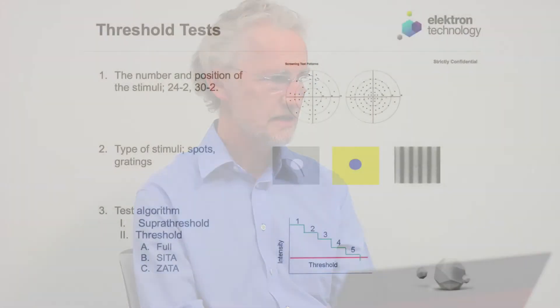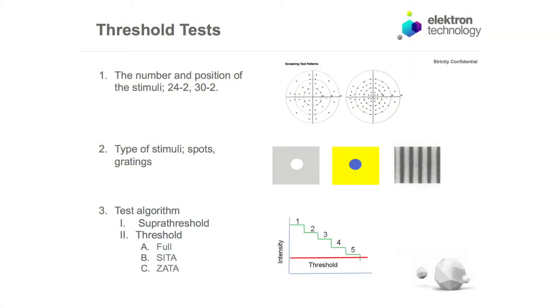The other characteristic of a field test is the type of stimuli used. We can use white stimuli on white backgrounds, sometimes called SAP or standard automated perimetry. We can use blue stimuli on yellow backgrounds, called SWAP — short wavelength automated perimetry. We can use gratings, lines, and all sorts of things. CETA and ZATA both use white on white backgrounds — the same size stimulus on the same background luminance. So the positioning is the same and the type of stimuli are the same; the way they differ is just in the algorithm they use.